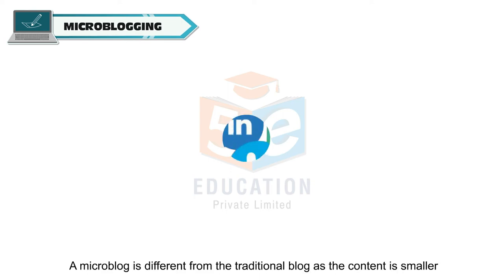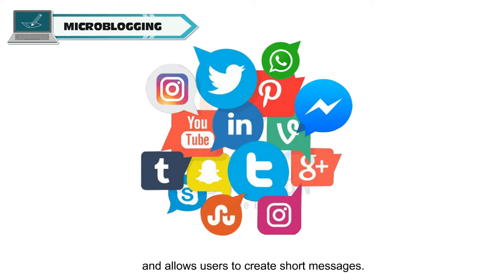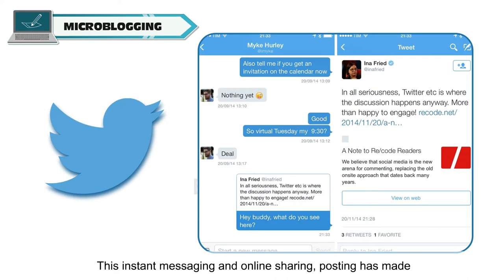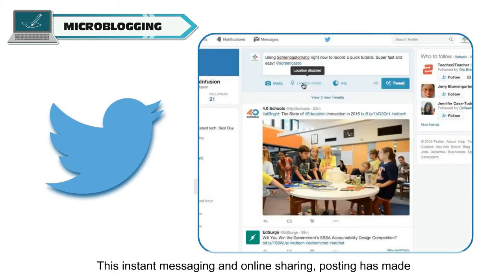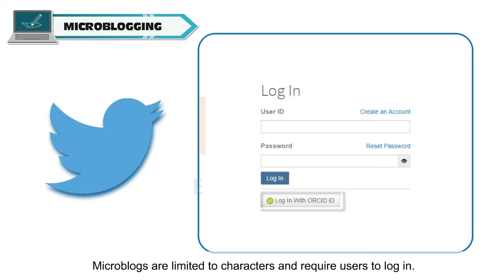A micro-blog is different from the traditional blog as the content is smaller and allows users to create short messages. Twitter is the social platform that has become a popular form for this type of blogging. This instant messaging and online sharing and posting has made communication easier and convenient. Micro-blogs are limited in characters and require users to log in.